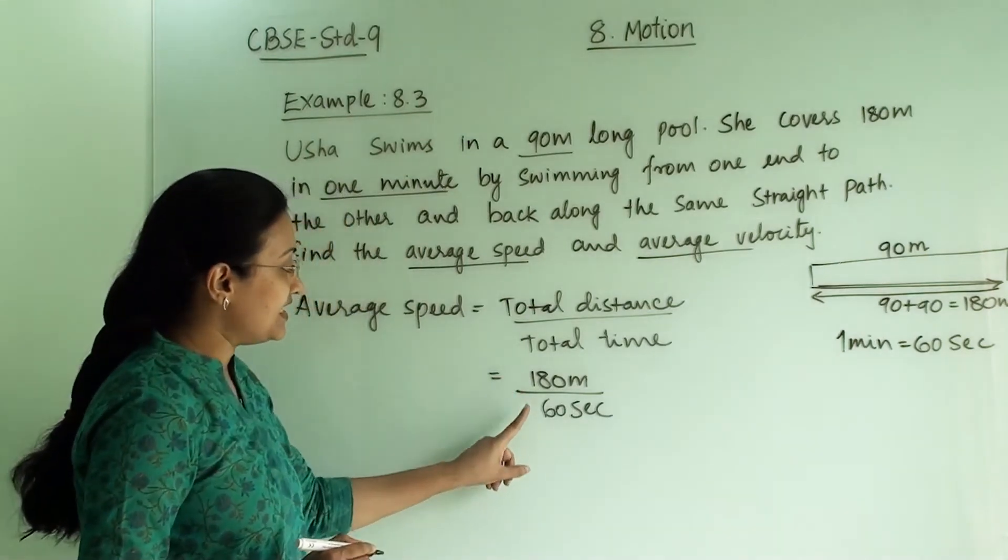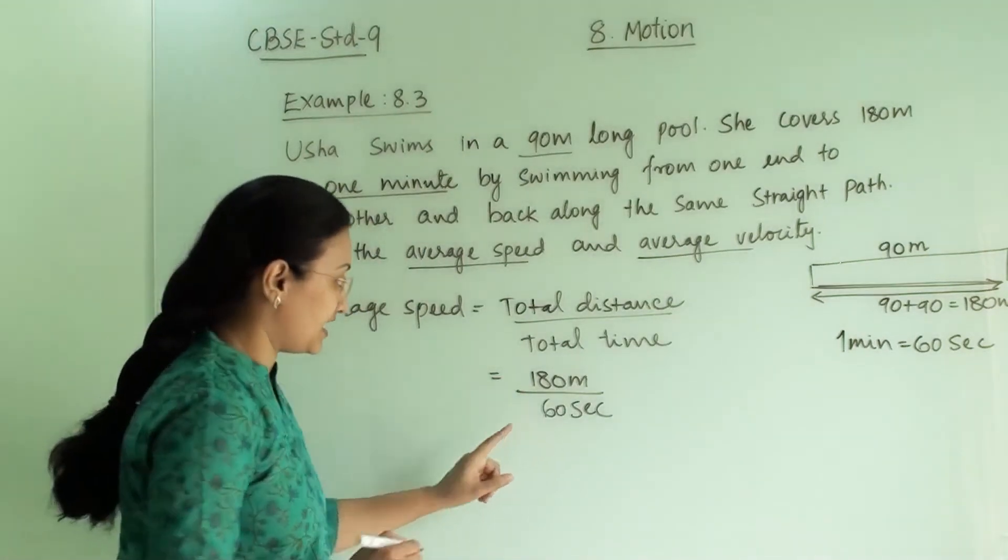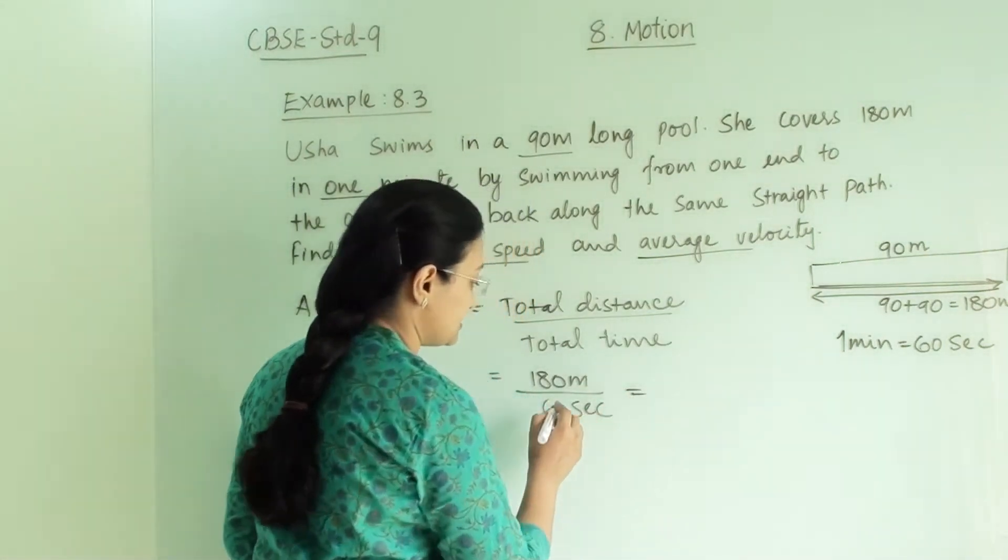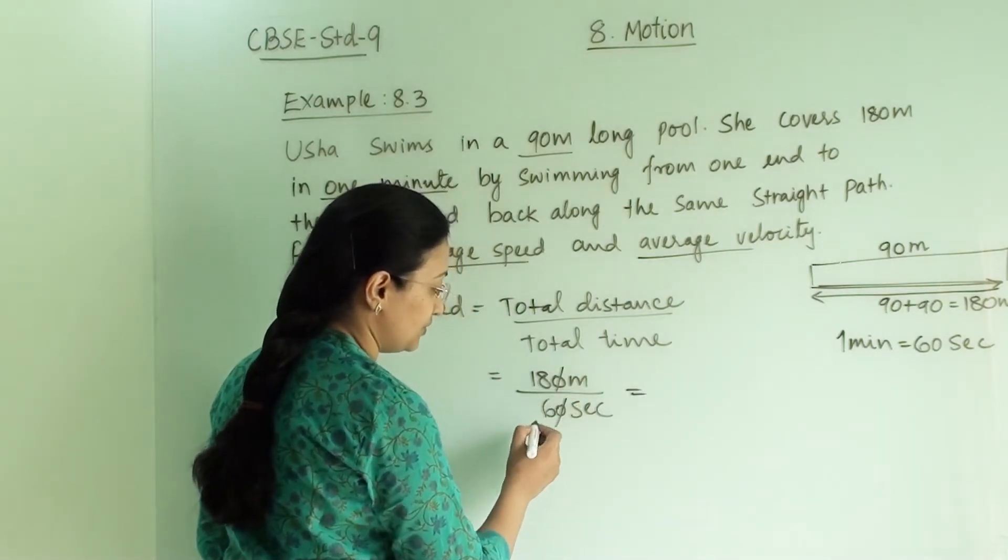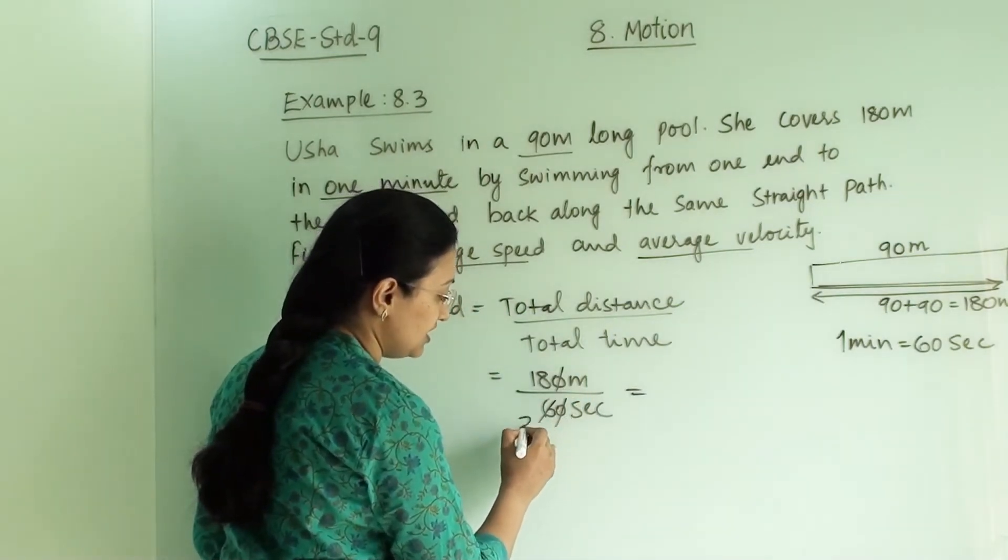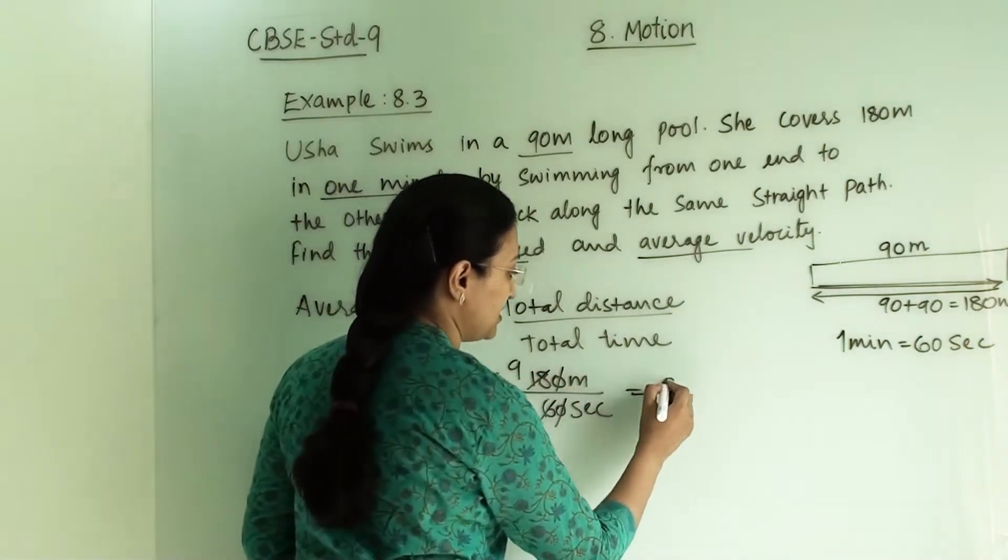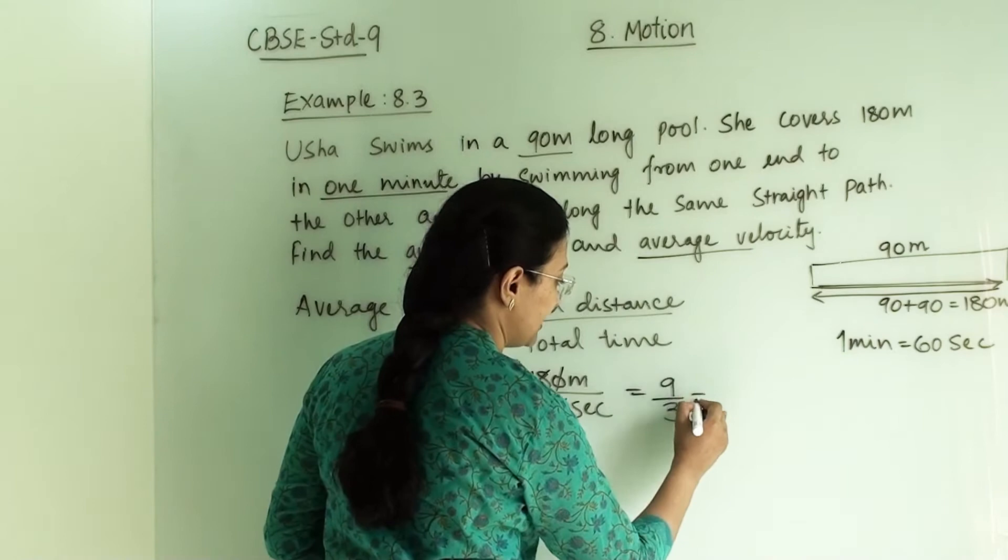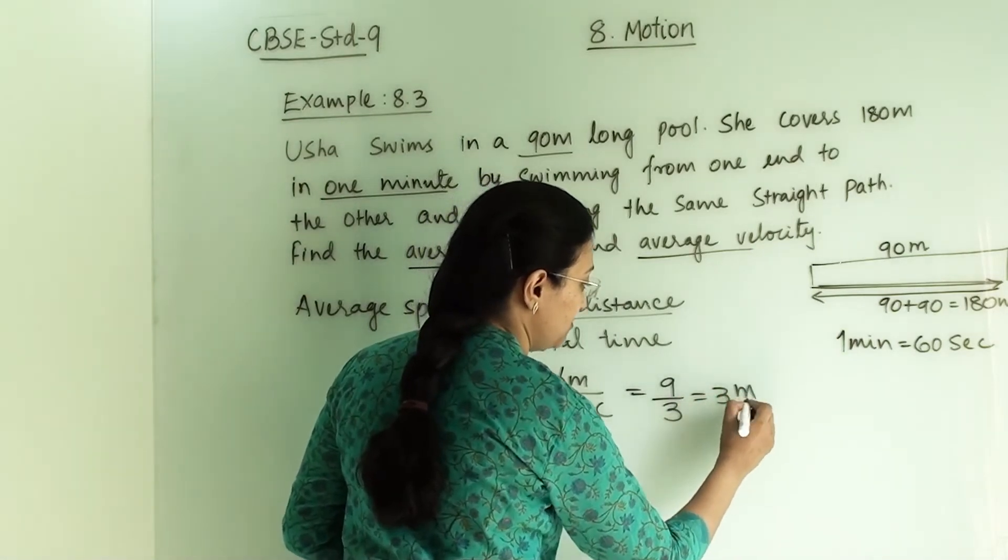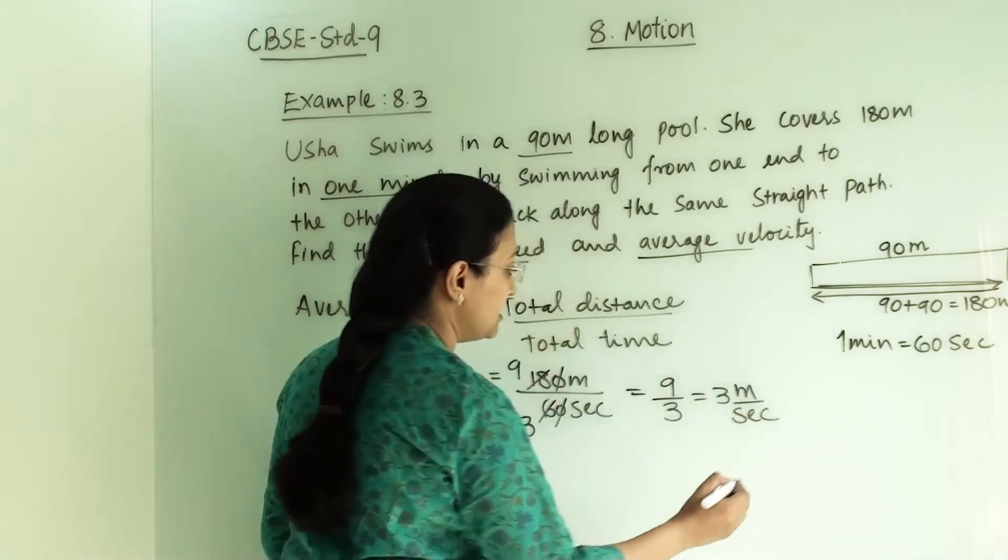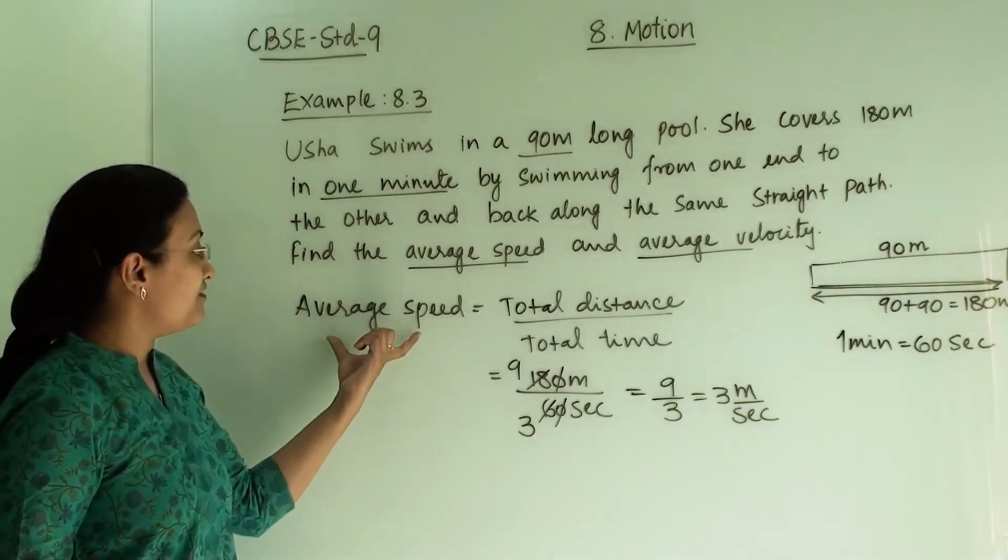So here it is 60 seconds. 180 divided by 60 seconds, so we will get 3 meters per second. That will be her average speed.